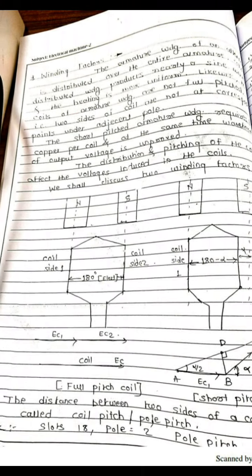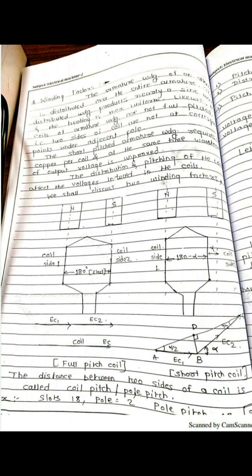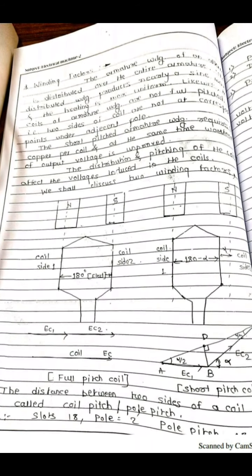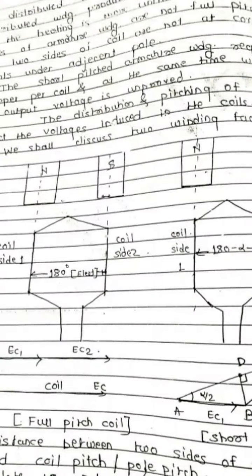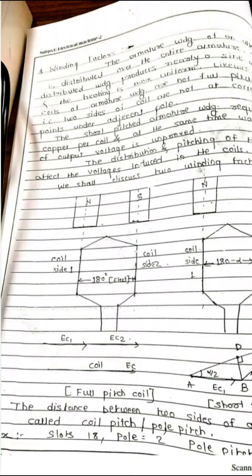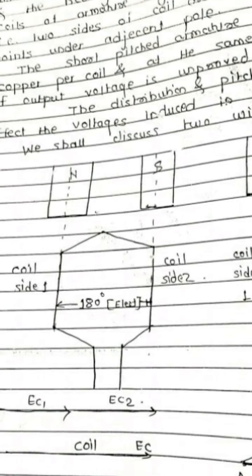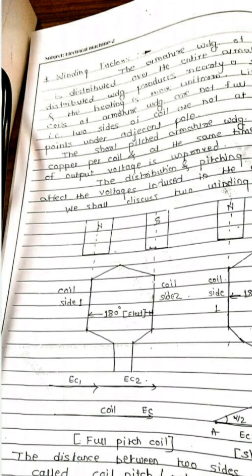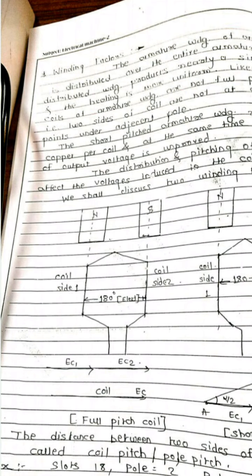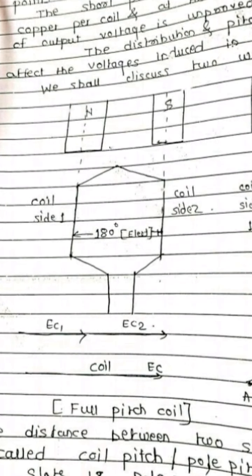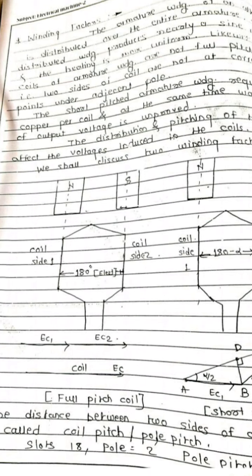For understanding of full pitch coil: if the two coil sides of a coil correspond to adjacent poles, this is called a full pitch coil. As shown in the figure, these are the two coil sides — coil side number one and coil side number two — and these are the two poles, pole number one and pole number two, which are adjacent poles. If these two coil sides correspond to those adjacent poles, then this is called a full pitch coil.